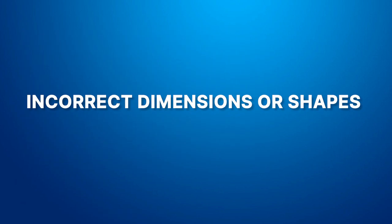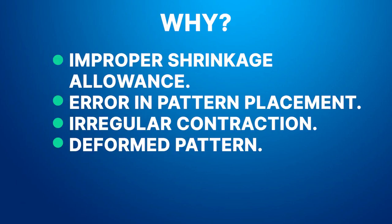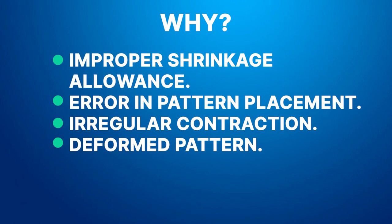Incorrect dimensions or shape is one of the most common casting defects, denoted by the letter F. This defect is the result of improper shrinkage allowances, error in placing the pattern, irregular contraction, or a deformed pattern.